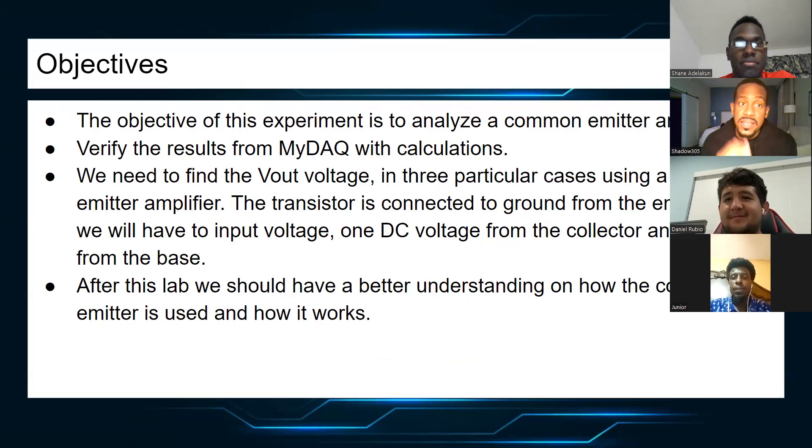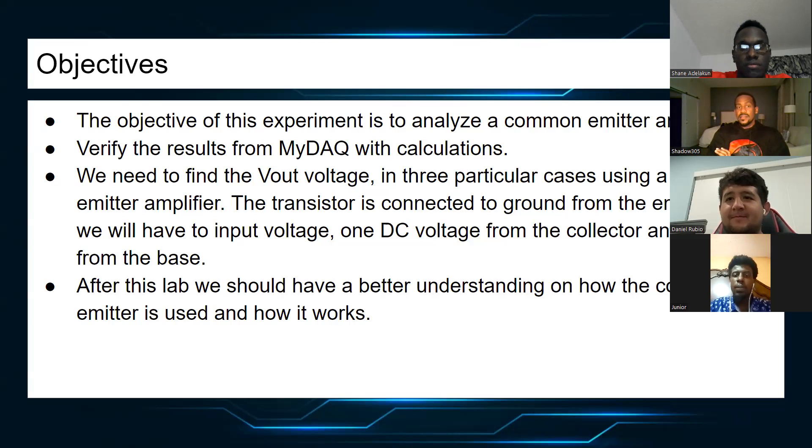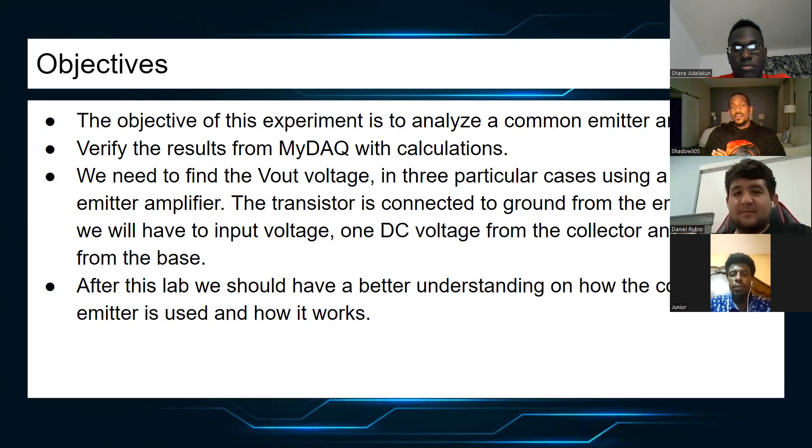The objective of this experiment is to analyze the common emitter amplifier, verifying the results from MyDAQ with calculations. We need to find the Vout voltage in three particular cases using the common emitter amplifier. The transistor is connected to ground from the emitter, and we will have to input voltage, one DC voltage from the collector and one AC from the base. After this lab, we should have a better understanding of how common emitters is used and how it works.